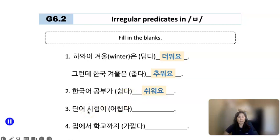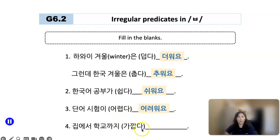단어 시험 — vocabulary quiz. Is it easy or difficult? To be difficult: 어렵다 → 어려워요. 집에서 학교까지 — it's close: 가까워요.